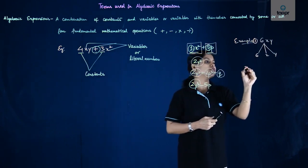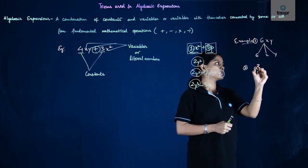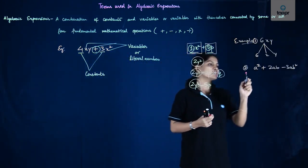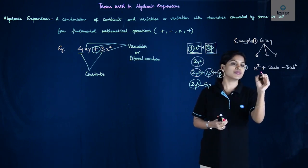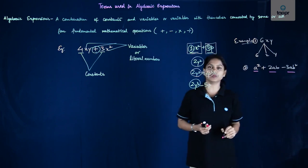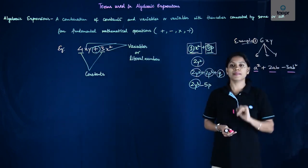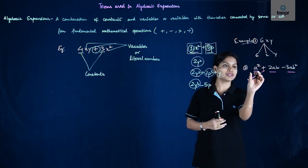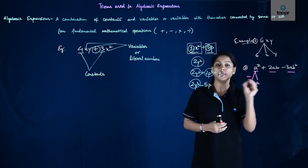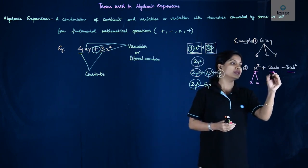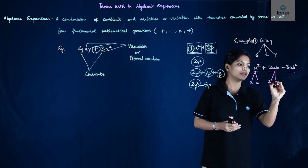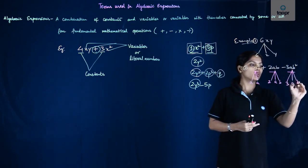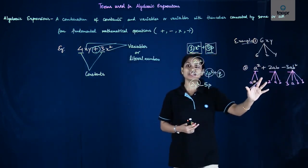Similarly, let's consider another algebraic expression for a quick recap. In this case, how many terms are we having? We have three terms: this is one term, this is the second term, and this is the third term. The constants used are 2 and minus 3, and the variables are a and b. If we would like to know the factors, term-wise: the factors of the first term a squared are a and a, because a times a gives us a squared. The second term has three factors — 2 is a constant factor and a and b are the variable factors. For the third term, the factors are 3, a, b, and another b. So 3·a·b·b are the various factors.